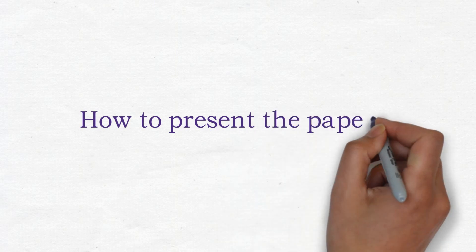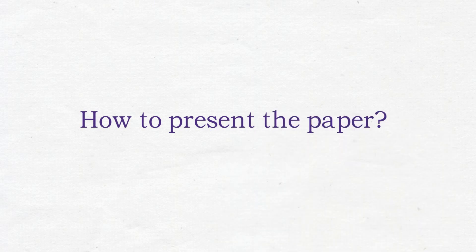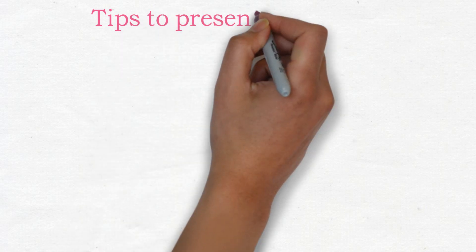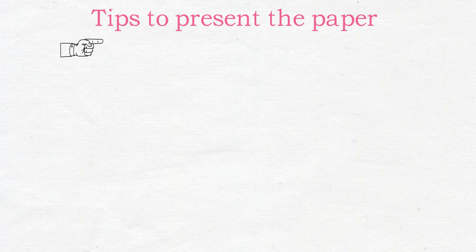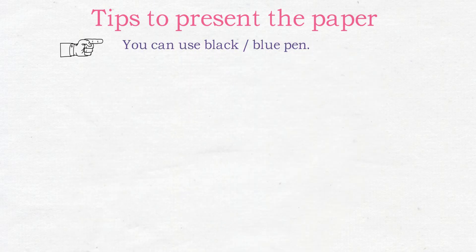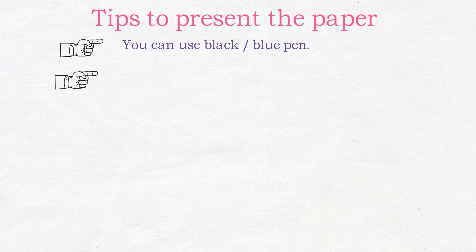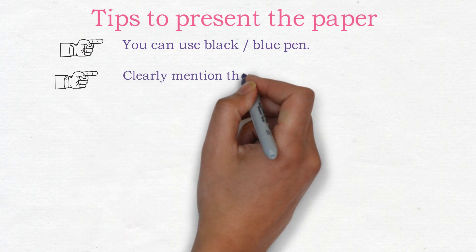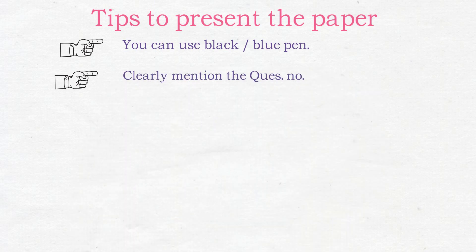Now let us see how to present the paper. This is very important, especially in theory subjects. Tip number one: you can use both black or blue pen. I suggest using the black pen for headings and key points, while blue pen for the main text. Also, clearly mention the question number so the sequence doesn't matter.